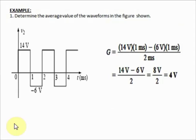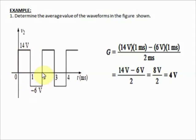Let's have an example. Problem number 1: Determine the average value of the waveform shown. The given figure is a square wave. You only need one period — from one point to the next. Since this is a square wave, you cannot use the 0.637 formula, which is only for sinusoidal waves. Use the area formula instead. To compute the area of the positive portion of the square wave, multiply the height by the width.